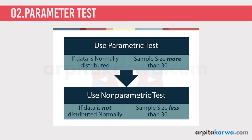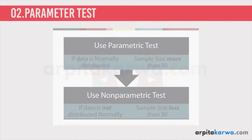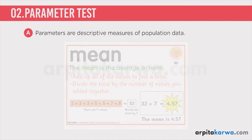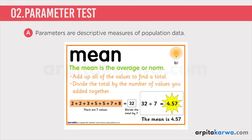In order to understand parametric test, let us understand what parameters are. Parameters are descriptive measures of population data such as population mean or standard deviation.